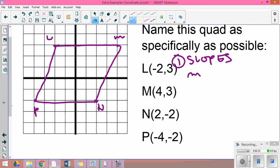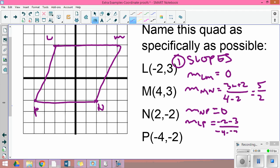The slope of LM is zero because it's a horizontal line. The slope of MN is going to be 3 minus -2 over 4 minus 2... minus minus is plus, so I end up with -5 over -2, which is 5/2. At this point I want to draw a conclusion.